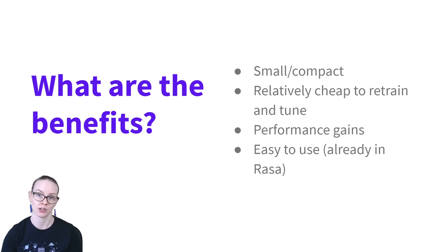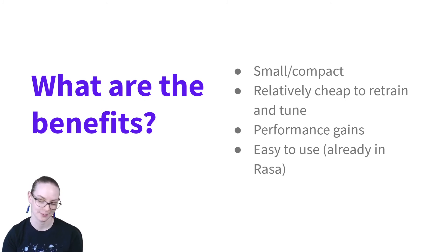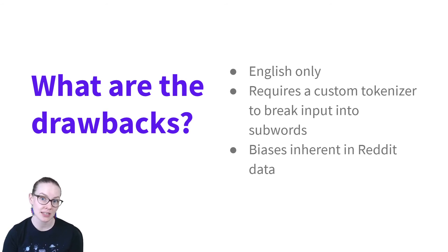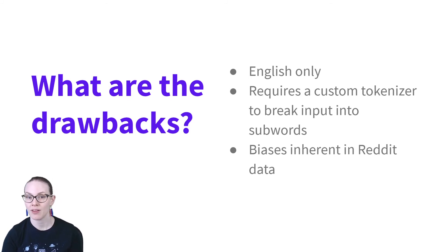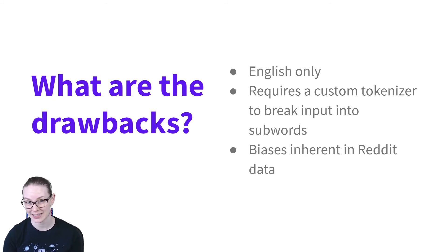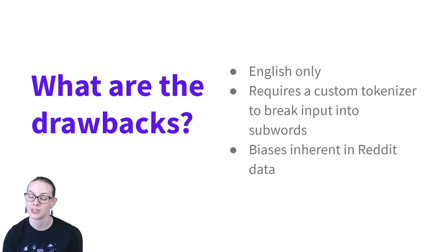There are some drawbacks, however. Probably the biggest one is that it's only currently available for English as a pre-trained model. If you're working with a different language, you'll need to do your own training. This is also complicated by the fact that it uses a custom tokenizer, meaning you'll need to develop your own tokenizer for a different language. Finally, there are the biases inherent in Reddit data — it may or may not include discussions of the specific topics you're interested in for your assistant.